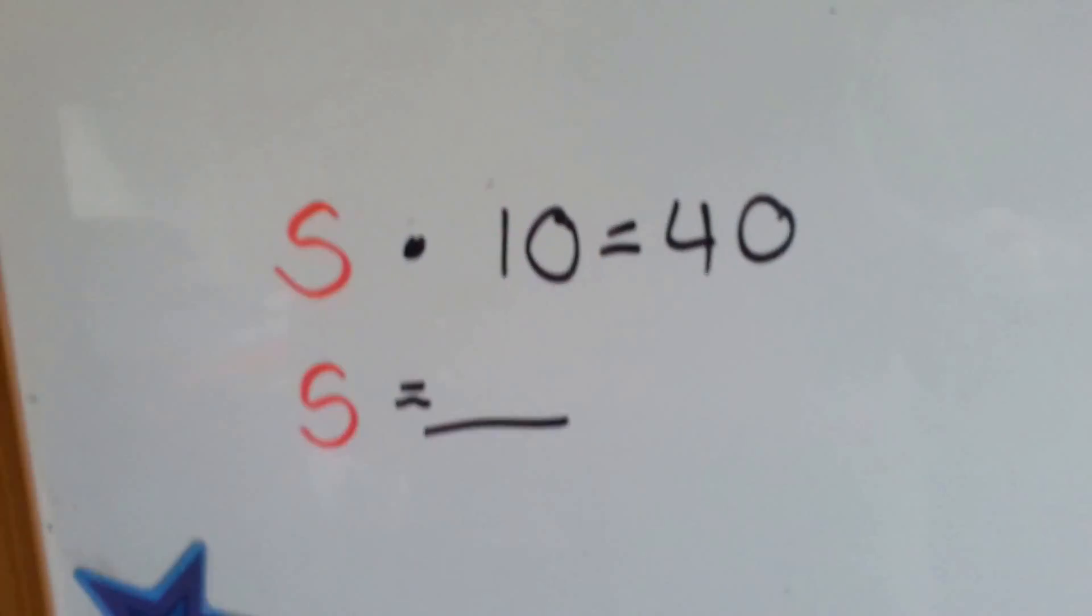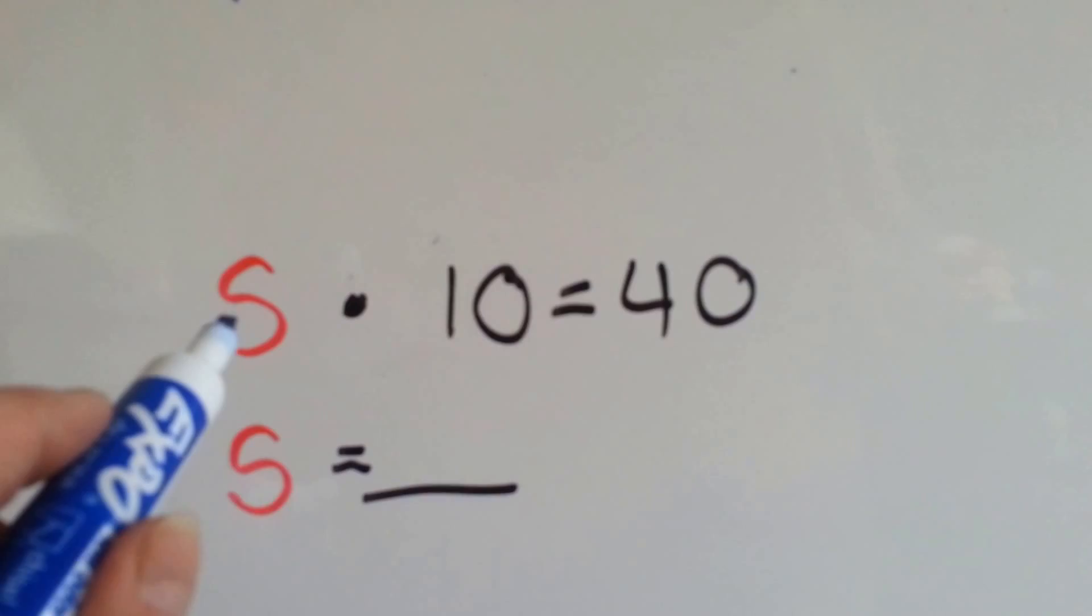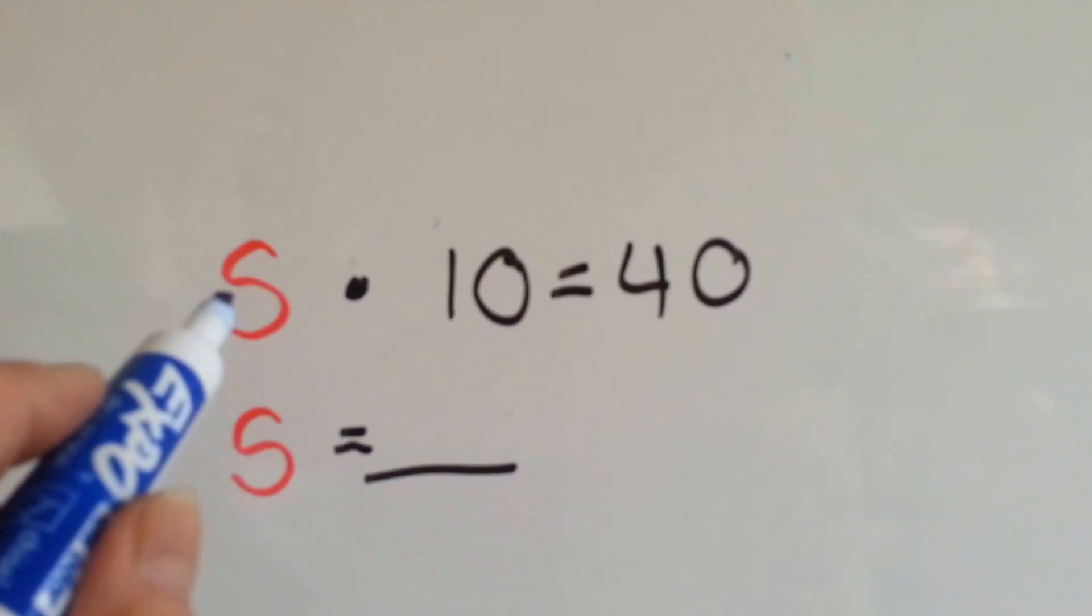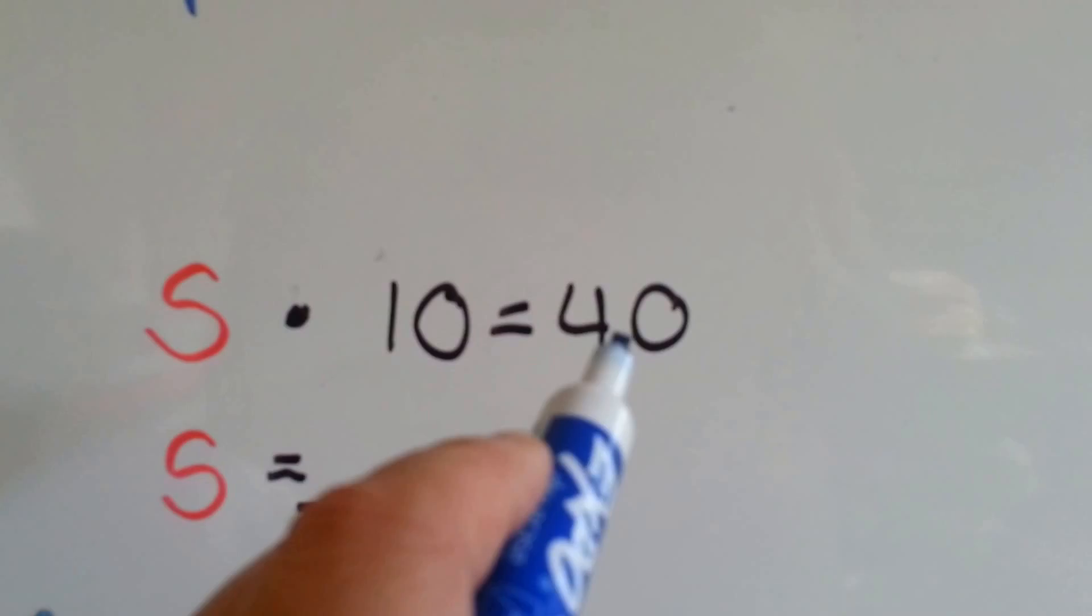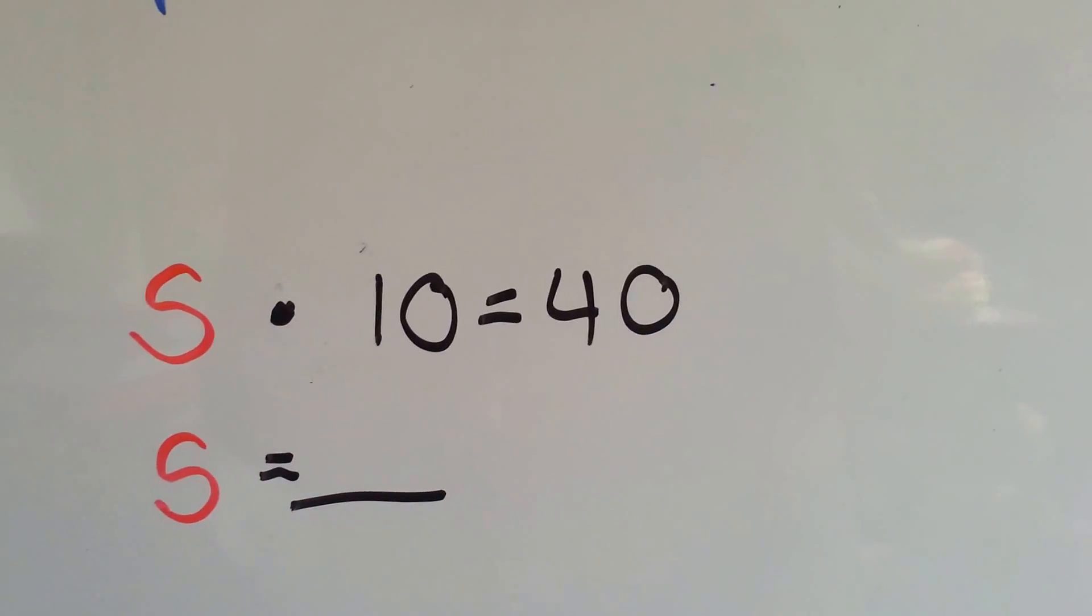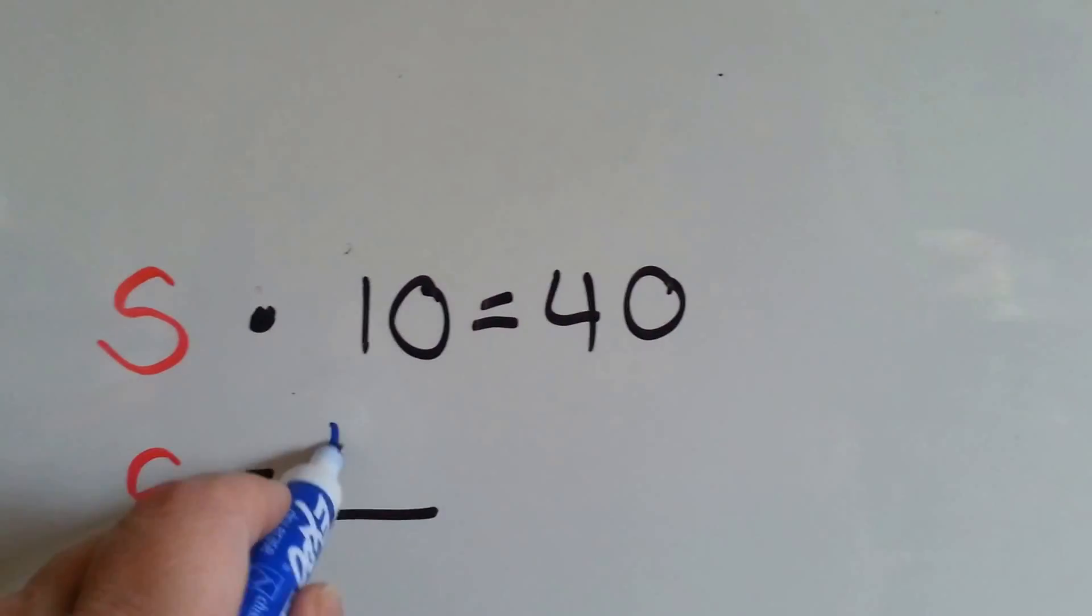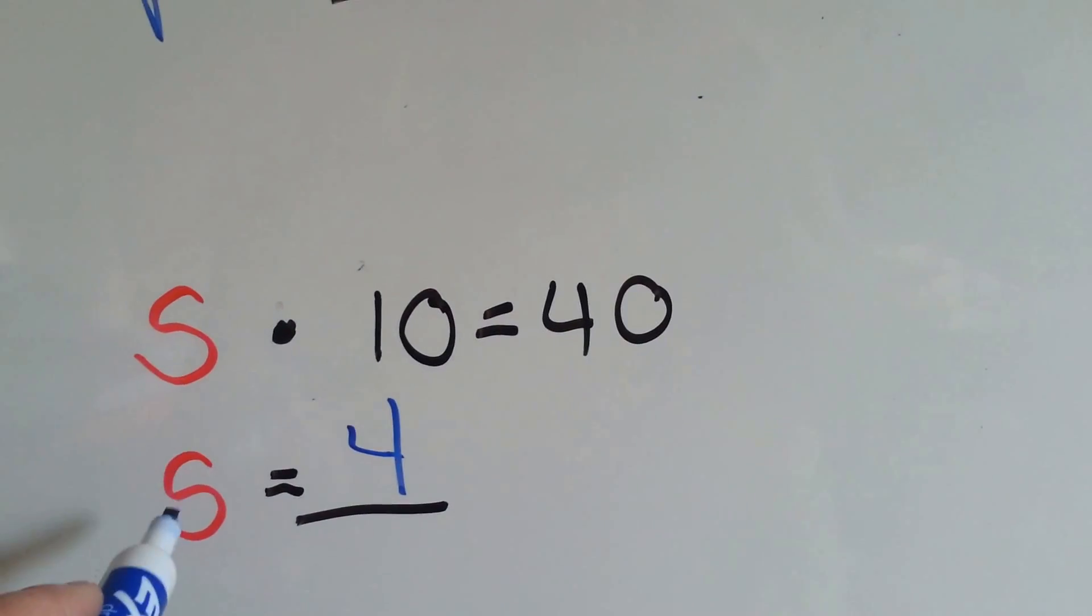Let's take a look at this one. Here's the variable s. We've got to figure out what the s is taking, what number it's taking the place of. s times 10 equals 40. What times 10 equals 40? 4 times 10 equals 40. So the variable s is equal to 4.